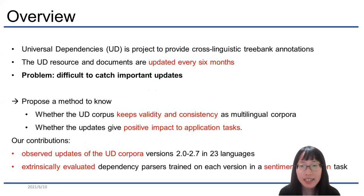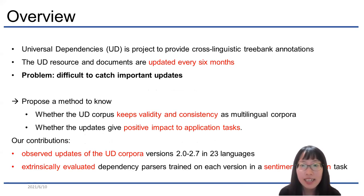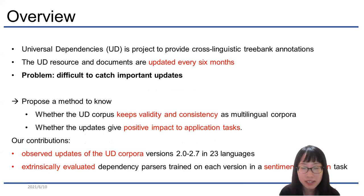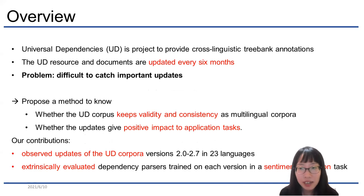UD is a worldwide project that provides cross-linguistic treebank annotations. The resources and documents are updated every 6 months. The UD treebank is maintained on GitHub so we can see all the updates to the corpus. However, due to the large size of the corpus, it is difficult to catch important updates.